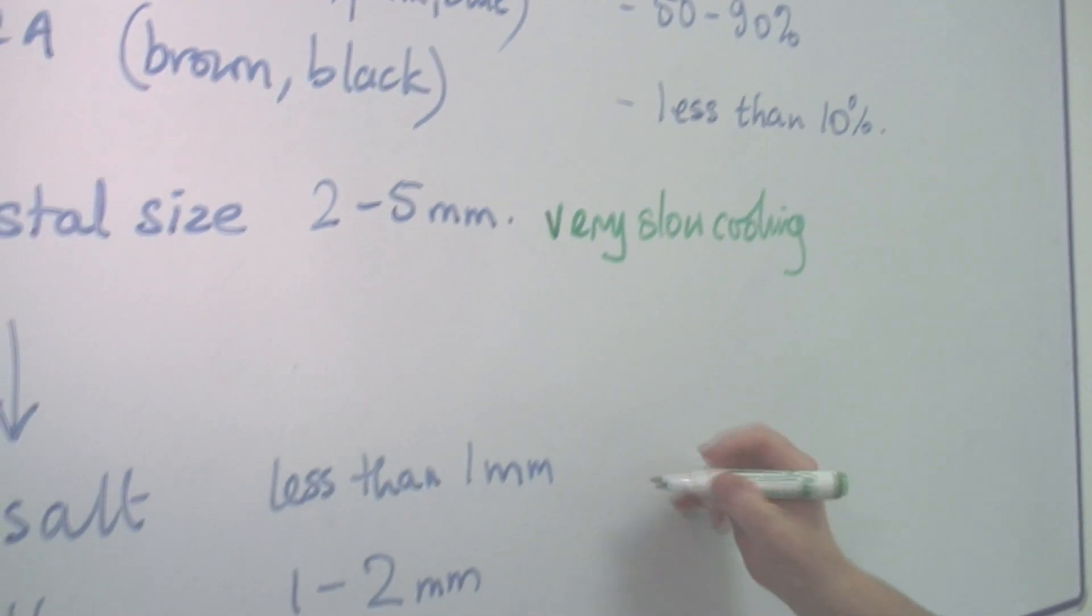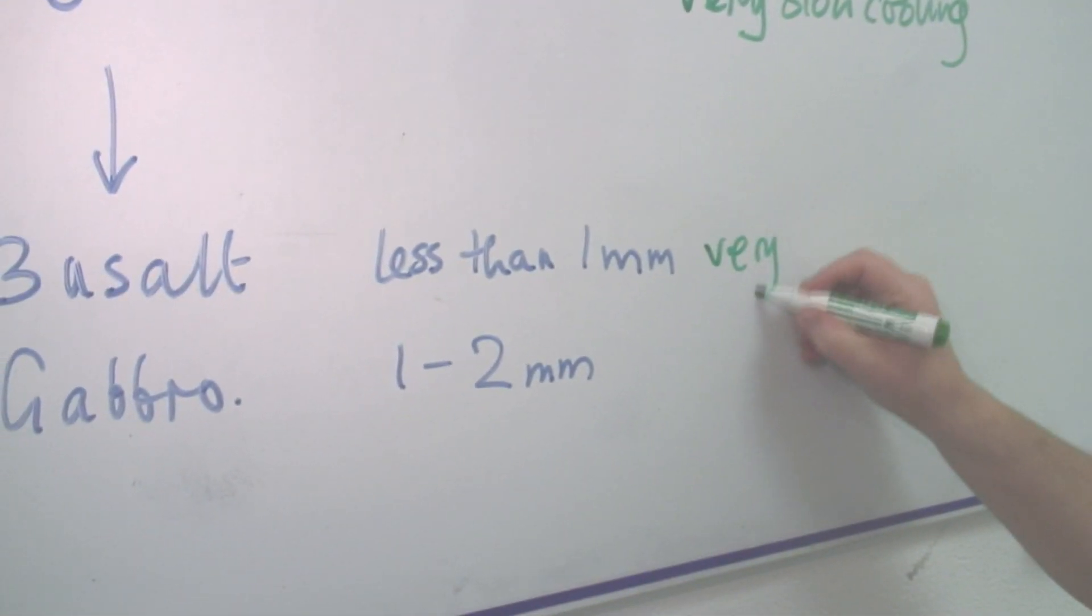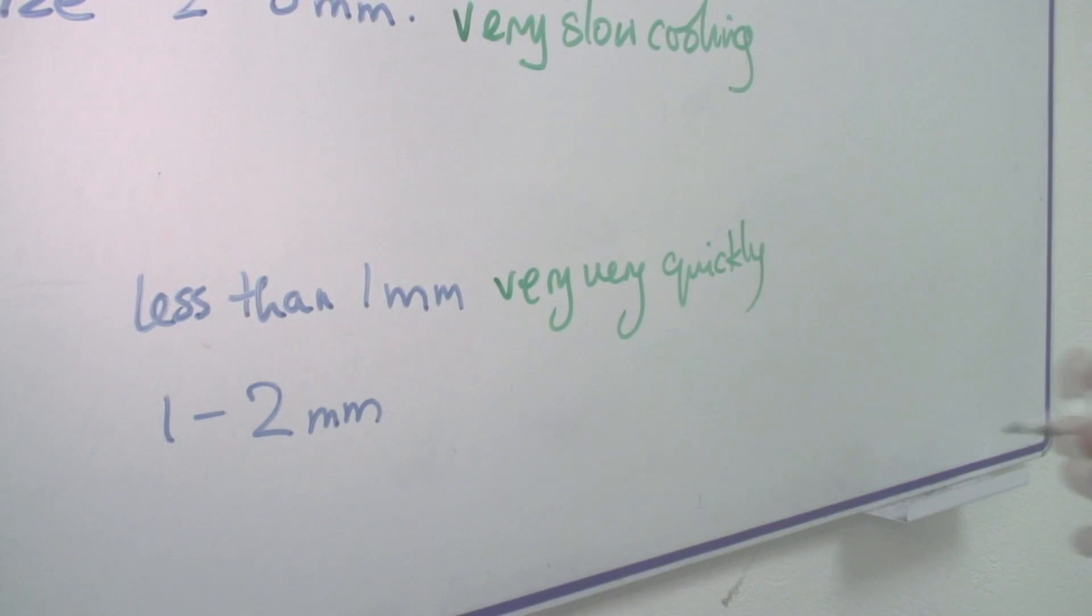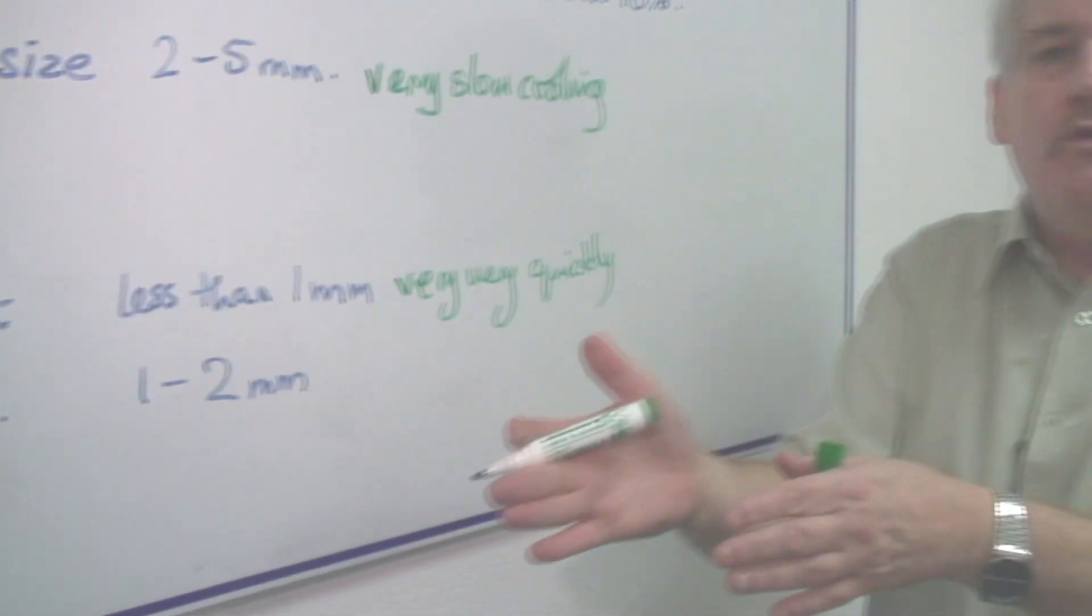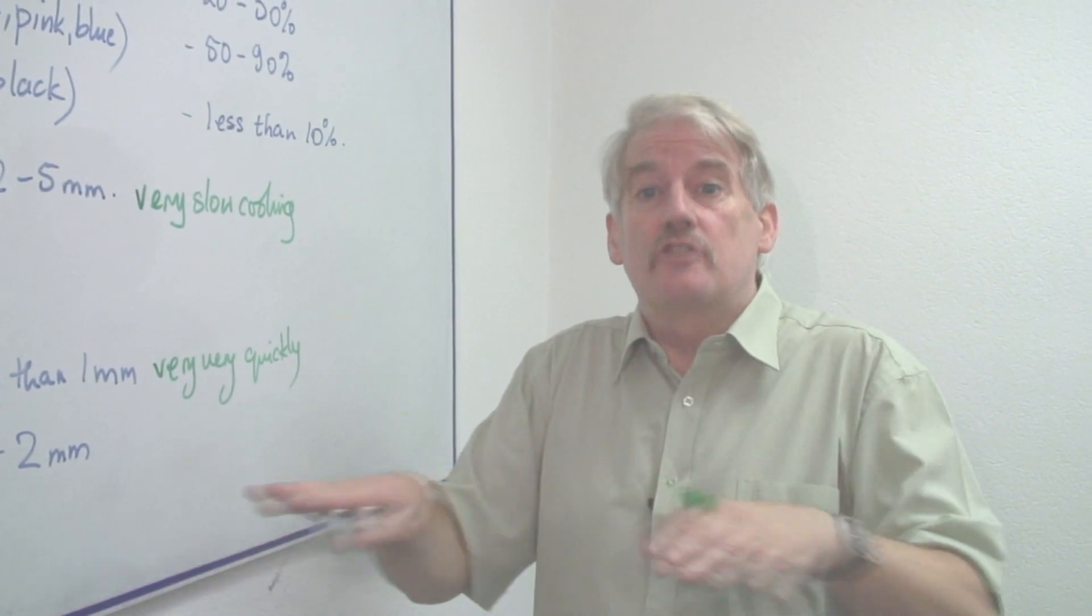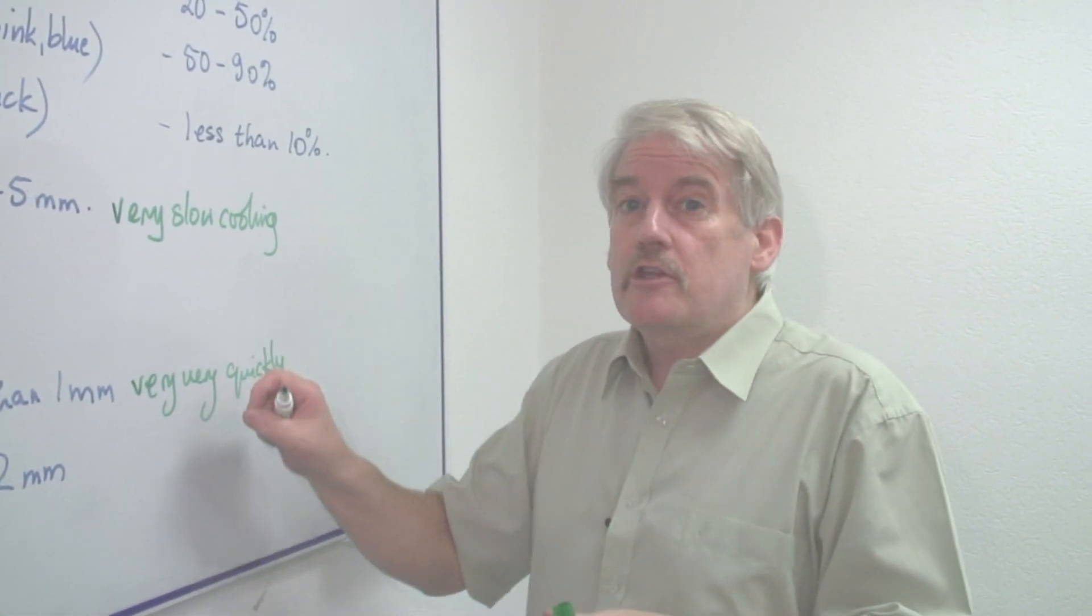The basalt, however, cooled very, very quickly. That's because it was forced in between cold layers of rock and cooled almost immediately to solid. So it produces very small crystals.